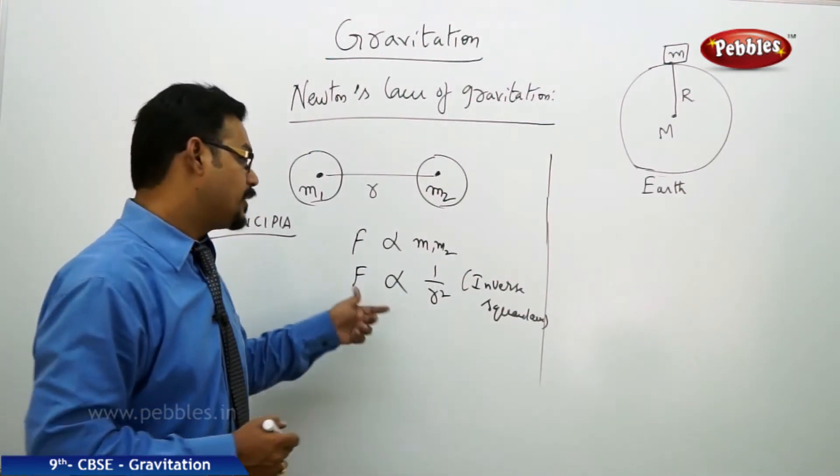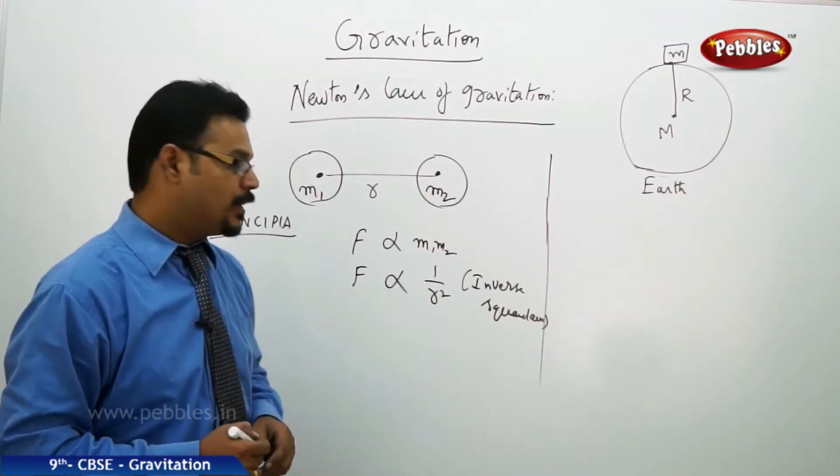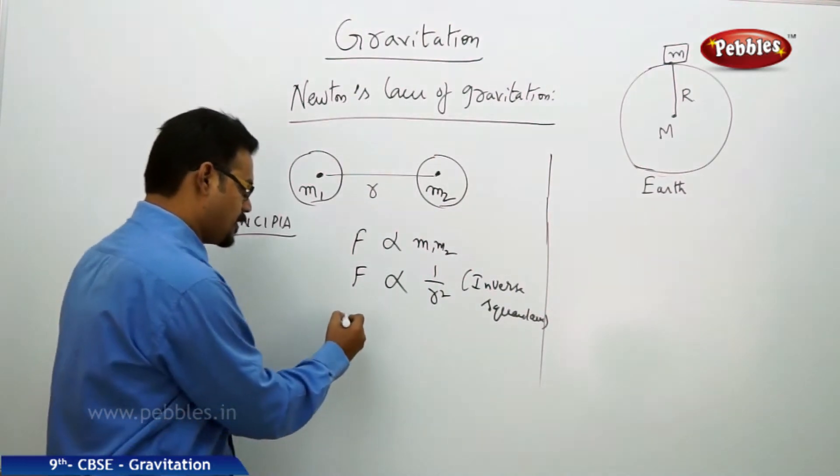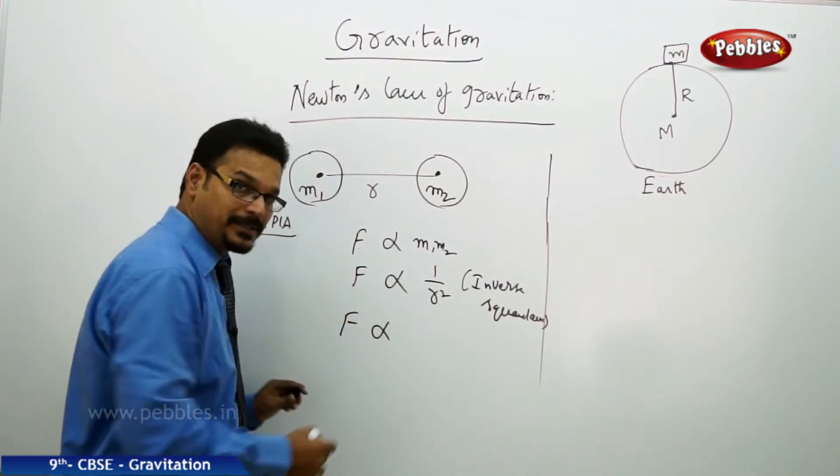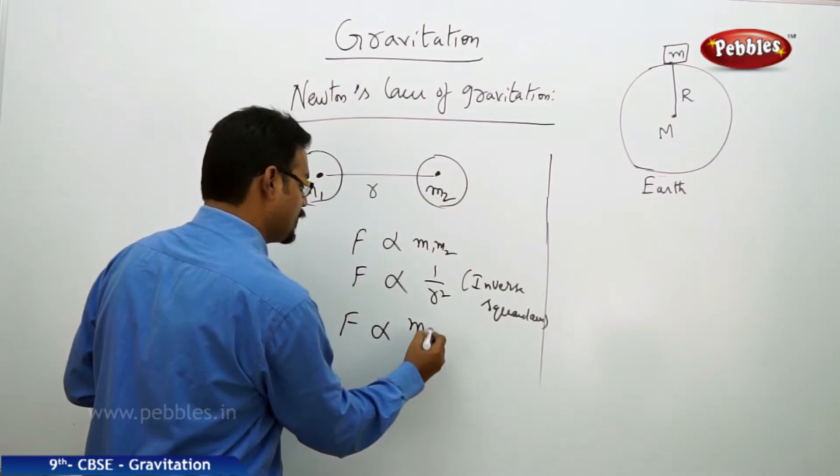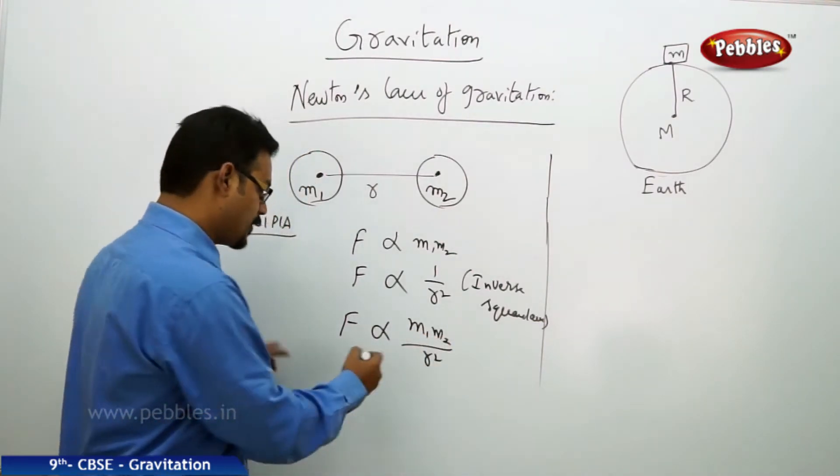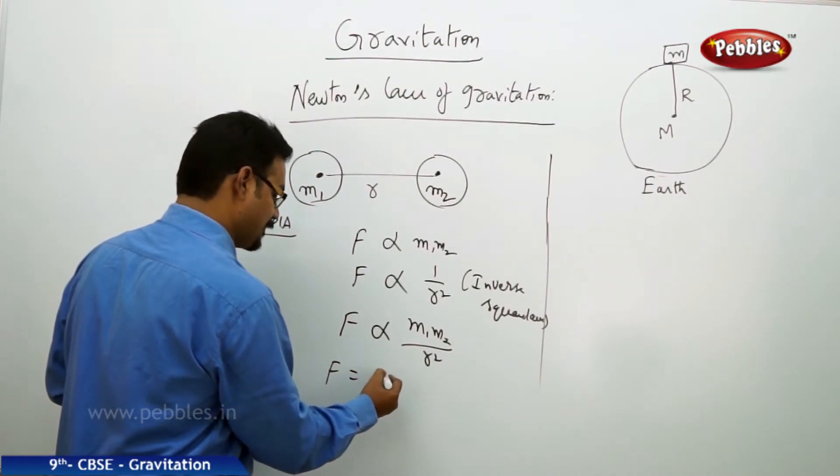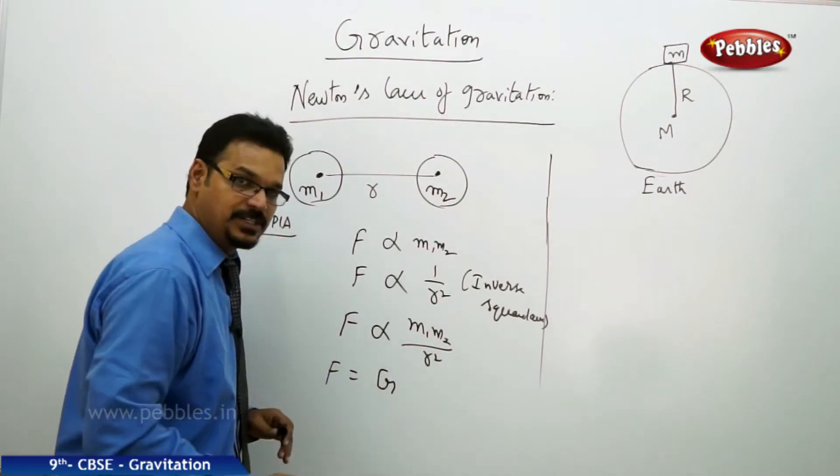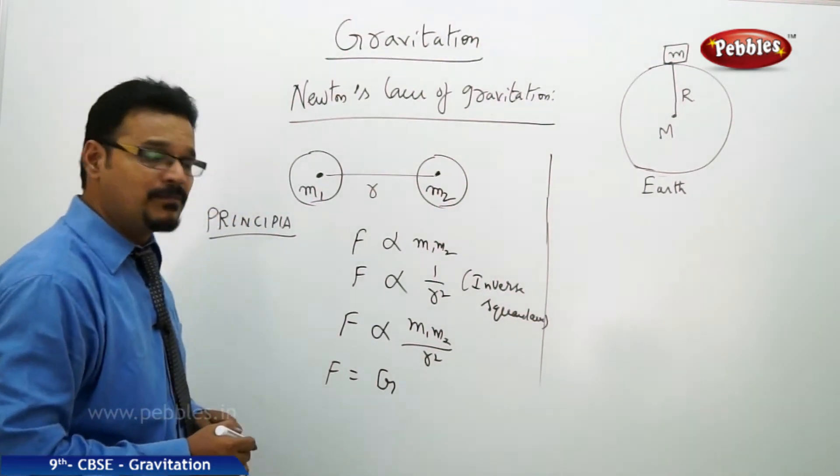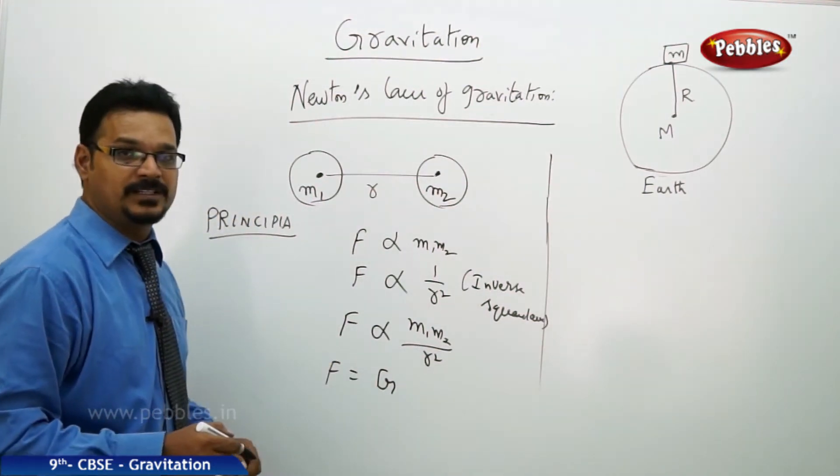This force is inversely proportional to the square of distance between them, also called inverse square law. If distance between two masses increases, force decreases. If distance decreases, force increases. Now if you take these two laws and combine them together according to mathematics, F is proportional to m1 m2 by r square.